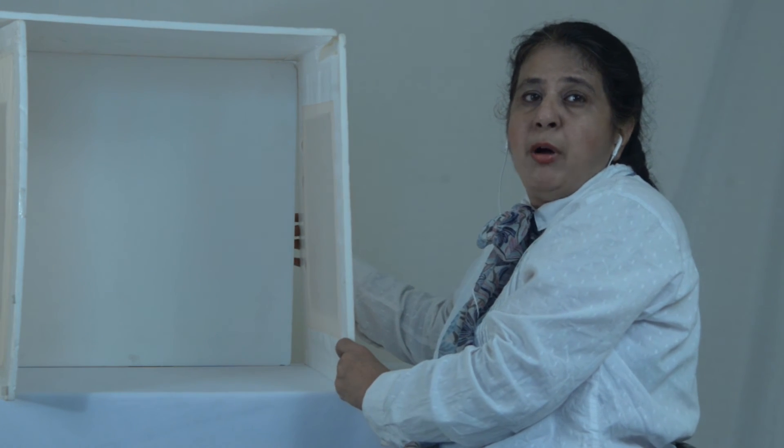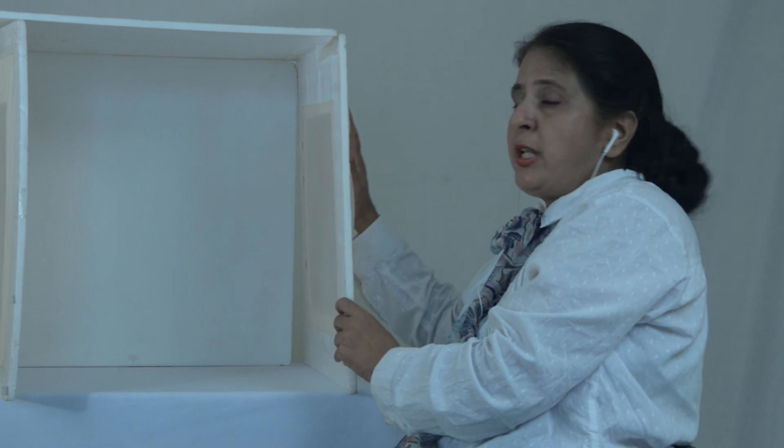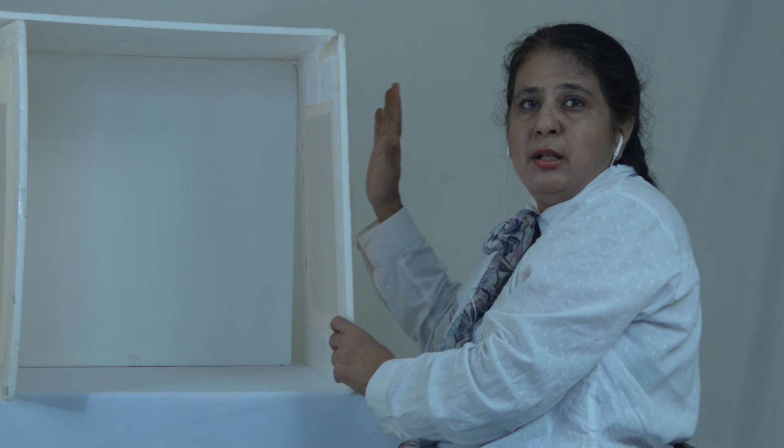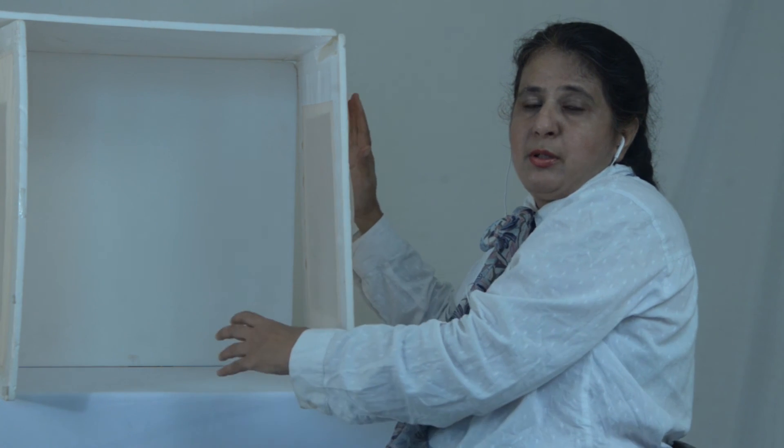The most important part of product photography is you should have a softbox through which the light is going to get diffused and the product will get sharp. Thank you very much. In the next class we will teach you how to light up your softbox.